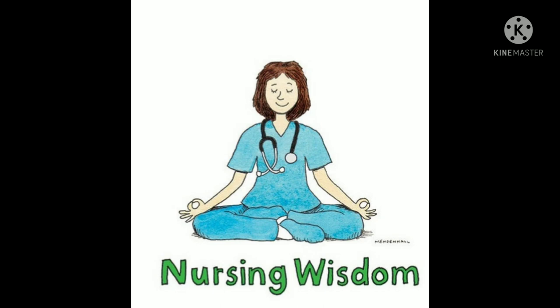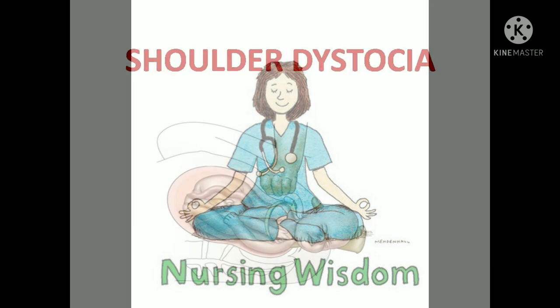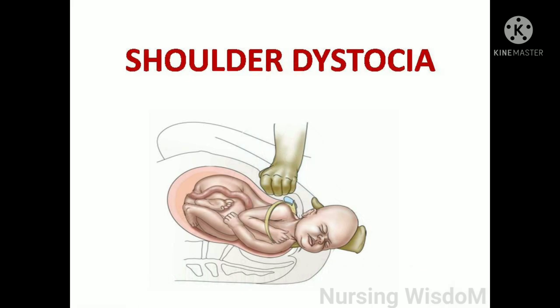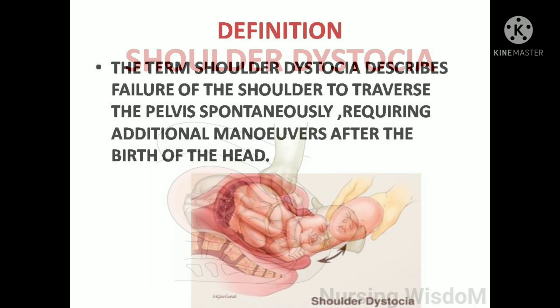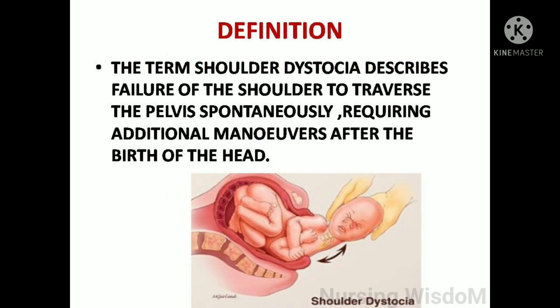Welcome to the Nursing Wisdom channel. Today we are going to see about shoulder dystocia. The term shoulder dystocia describes failure of the shoulder to traverse the pelvis spontaneously, requiring additional maneuvers after the birth of the head.